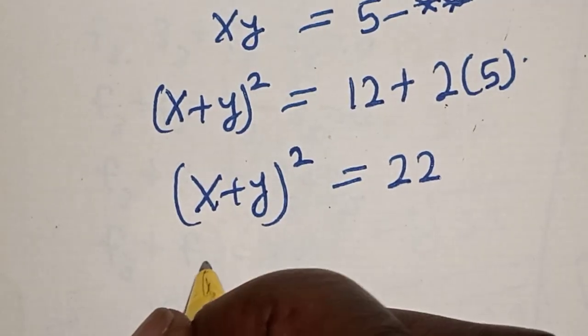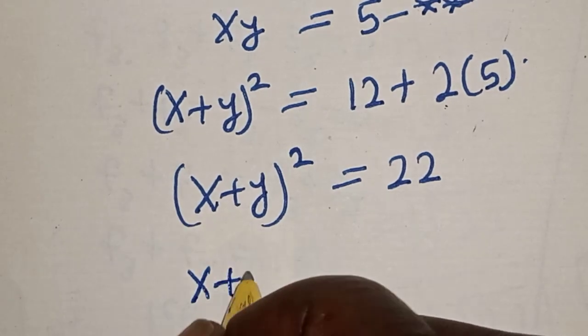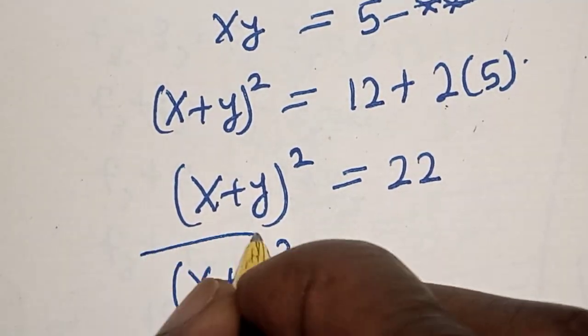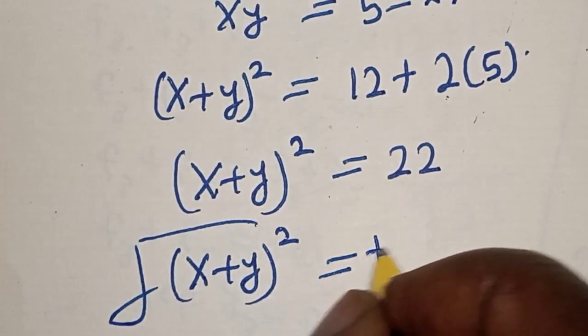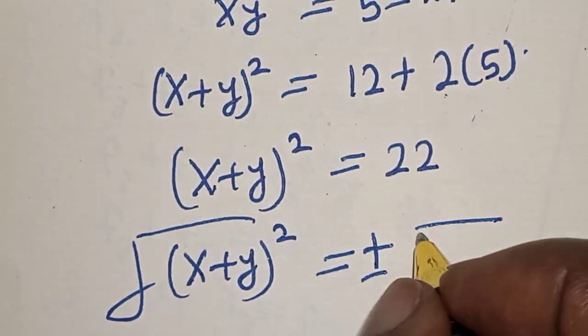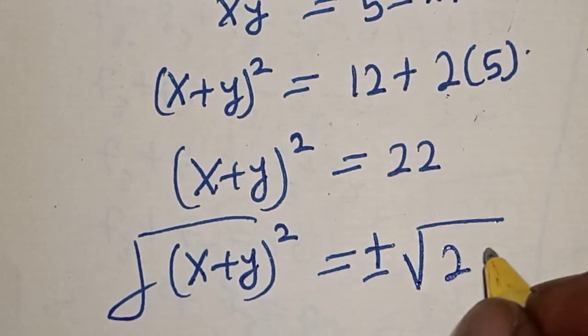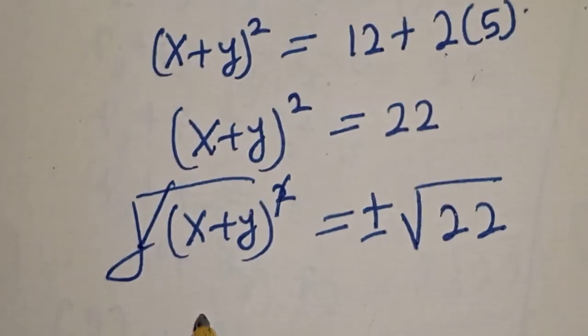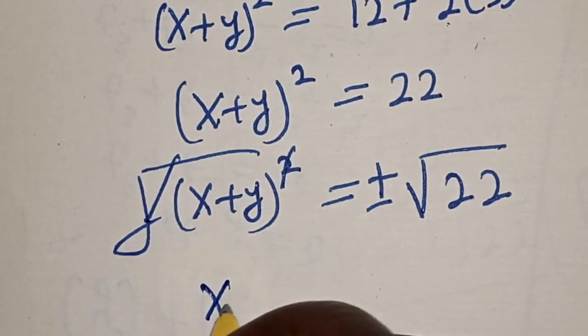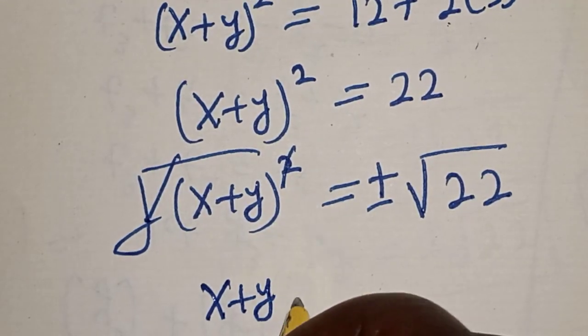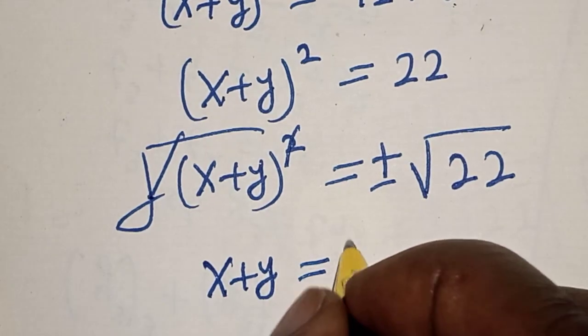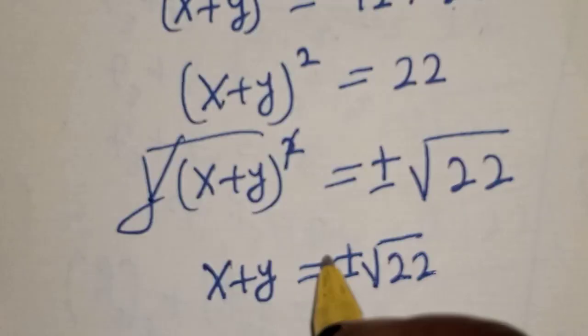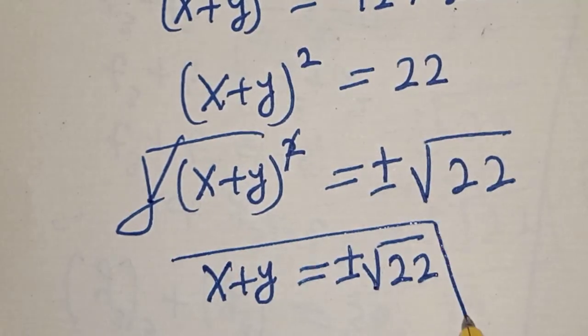Now x plus y squared, let's take the square root, is equal to plus or minus square root of 22. This will cancel this. x plus y is equal to plus or minus square root of 22. That is the final answer.